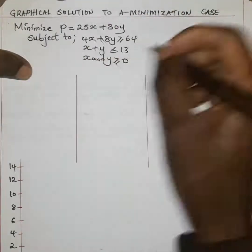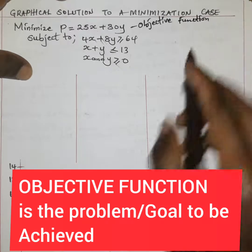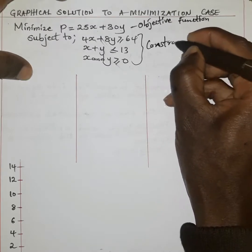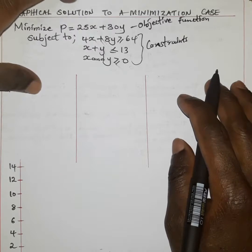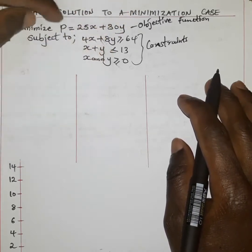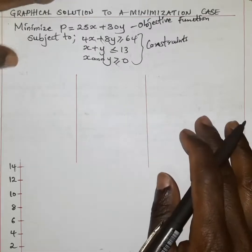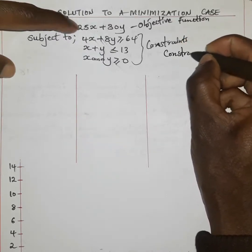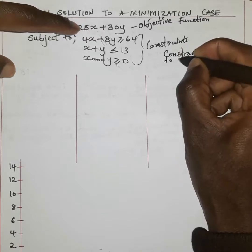What we are supposed to minimize is known as the objective function. The objective here is to minimize the function P subject to these constraints. When we talk about constraints, we are referring to the limiting factors or limiting resources which should be minimized as low as possible to ensure that the value of P remains at its lowest level. When we talk about the minimization problem, we have steps. The first step is to convert the constraint inequalities to equations.